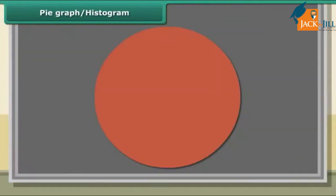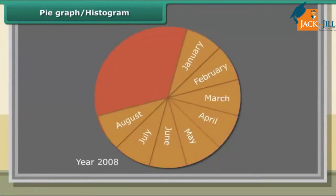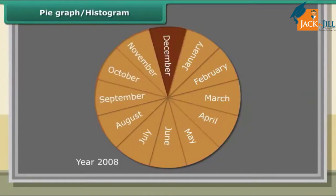Pie graph or circle graph: A pie graph is used to compare parts of a whole. The circle represents the whole. Here is a pie graph. In the month of December 2008, Ramu spends his monthly salary amounting to rupees 7200 on different items.